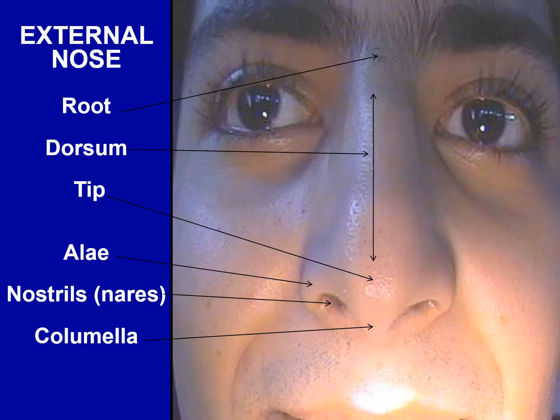The nose is the uppermost part of the respiratory tract and contains the peripheral organ of smell. It consists of an external nose and the nasal cavity, both of which are divided by a septum into right and left halves.